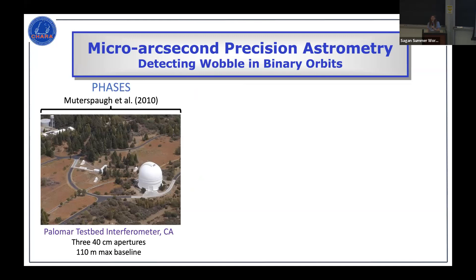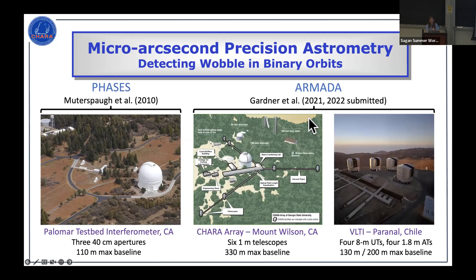There was an early survey using the Palomar Testbed Interferometer, and the PHASES survey that monitored about 50 binaries over time. More recently, the ARMADA survey was done at both CHARA and VLTI. The CHARA array on Mount Wilson has six one-meter telescopes with baselines from 30 to 330 meters. VLTI can combine either the four eight-meter unit telescopes — with a maximum baseline of about 130 meters — or the smaller 1.8-meter auxiliary telescopes, covering both the northern and southern hemispheres.